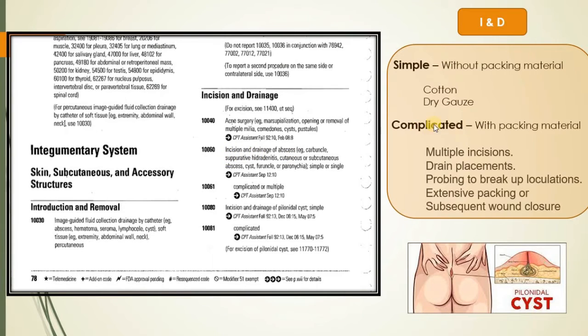And then here you can see complicated with packing material. So incision and drainage perform with the help of packing material. That time we have to consider it's a complicated or multiple type of incision and drainage. So that time we need to use 10061. This is the importance and this is very essential difference.